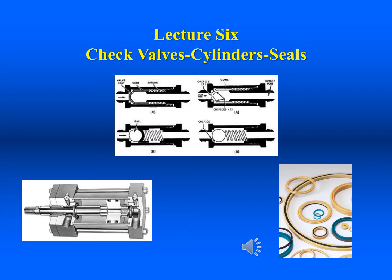This unit discusses the check valves, cylinders, and seals. The check valve is a directional control valve used in both hydraulic and pneumatic systems. Its primary application is to provide bypass flow for flow controls, pressure controls, filters, and coolers. Close cousins of the check valve, the shuttle valve and the quick exhaust valve will also be discussed.